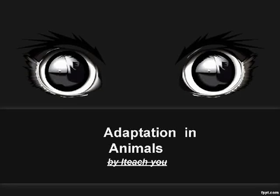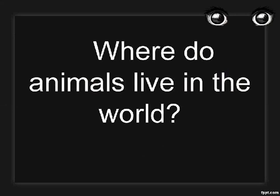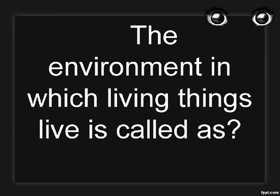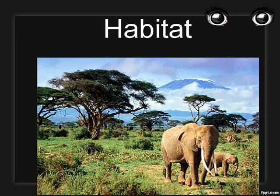Adaptation in animals. Where do animals live in the world? Ocean, mountains, deserts and cold places. The environment in which living things live is called a habitat.